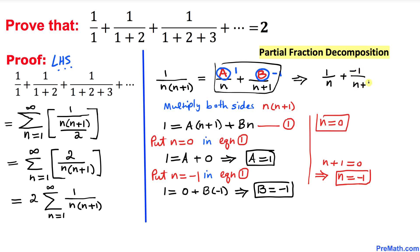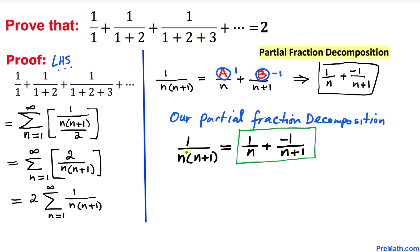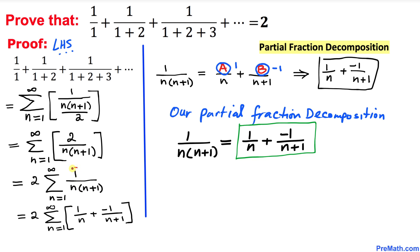Therefore, the partial fraction decomposition of 1 over n times (n plus 1) is 1 over n minus 1 over (n plus 1). We now replace the original fraction with this decomposition in our series.